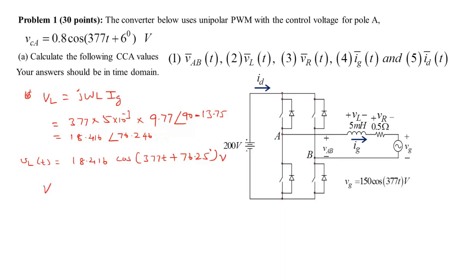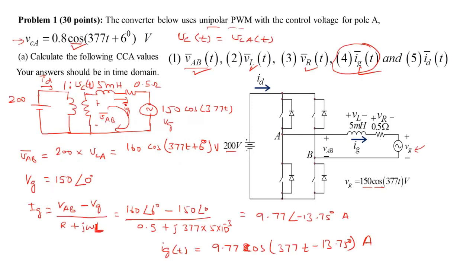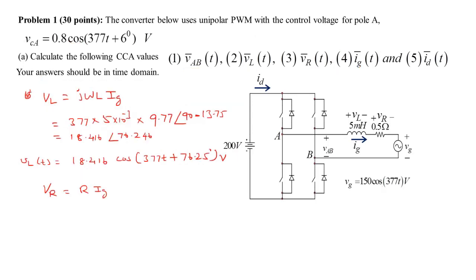Similarly, Vr equals R times Ig, so with R = 0.5 we simply scale ig(t) by 0.5. Therefore vr(t) = 4.885·cos(377t − 13.75°) volts. That completes the first four quantities. The last one is Id, the DC link current.